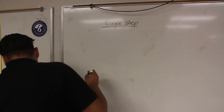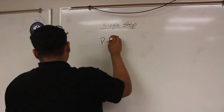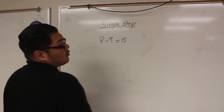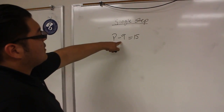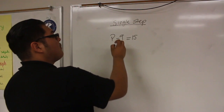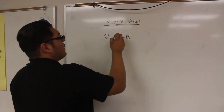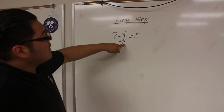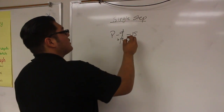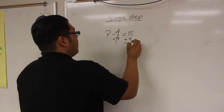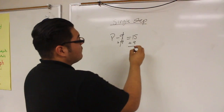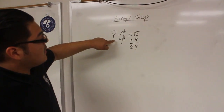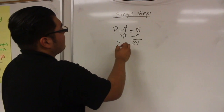For the second problem, it would be p minus 9 equals 15. So what you want to do here is do the opposite of subtraction, which would be plus 9, and that cancels out. You do the same thing on the other side, which would be plus 9, and that should give you 24. You just bring this down, and that would give you your answer.